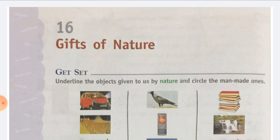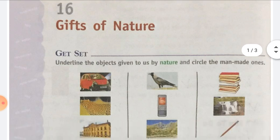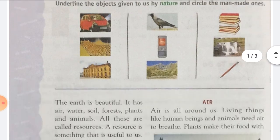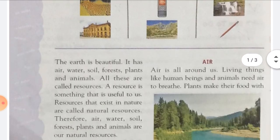So this is an activity and you have to do it yourself. That is, underline the objects given to us by nature and circle the man-made ones. So let's start reading.